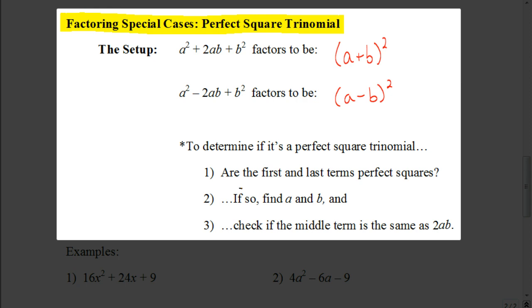Now, if it's in that first form, a squared plus 2ab plus b squared, that's going to factor down to be a plus b quantity squared. Or, if it's a squared minus 2ab plus b squared, that's going to factor down to be a minus b quantity squared.